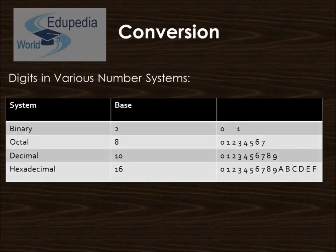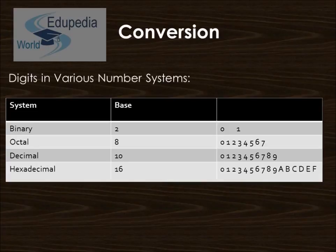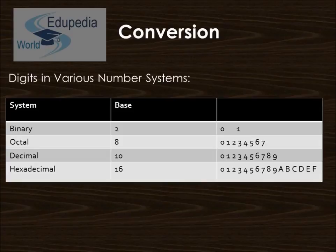Each numbering system has a base, which defines the maximum number of values that can be assigned to a single digit. The binary number system has base 2, allowing only digits 0 or 1. The octal number system has base 8, supporting digits ranging from 0 to 7. The decimal number system has base 10, supporting digits from 0 to 9.